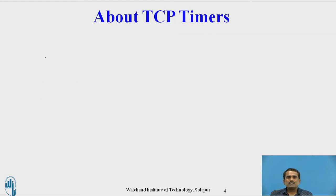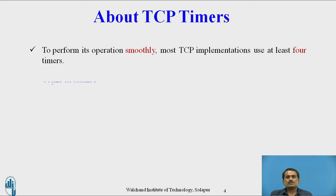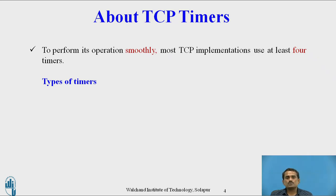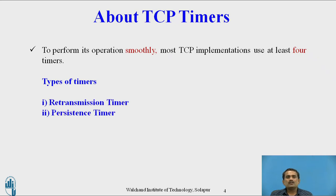In the previous video, we already discussed TCP timers and the first TCP timer, which is the retransmission timer. In this video, we will discuss two algorithms used in TCP retransmission timers — exponential backoff algorithm and Karn's algorithm — and after that, the next three timers: persistent timers, keep-alive timers, and time-wait timers.